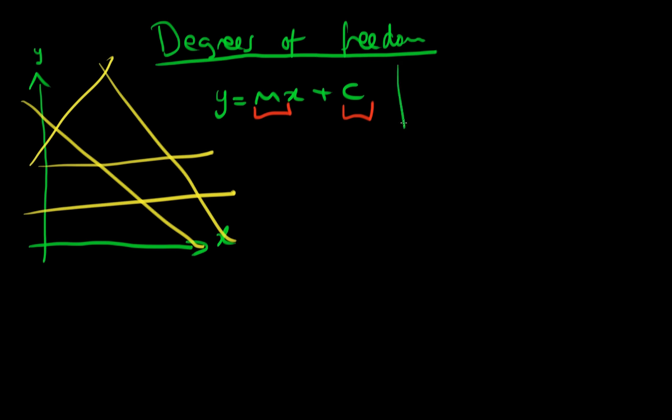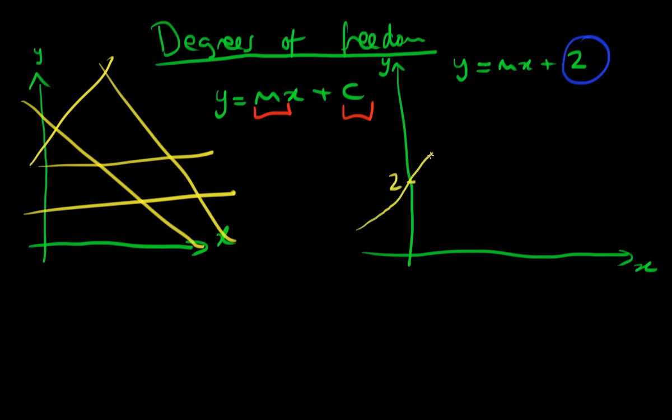Well let's think about a similar example whereby I'm again drawing straight lines, except I'm now not free to vary the constant c. So here I have y equals mx plus let's say 2. So the y-intercept always has to be 2 for all of the straight lines which I draw. So let's say 2 is some point here. I can still draw infinitely many straight lines that go through that intercept just by varying the gradient. But notice that all of these lines have to go through this point here too.